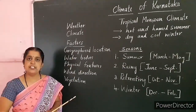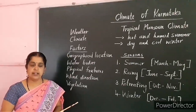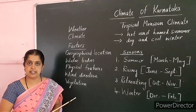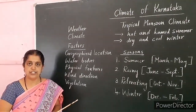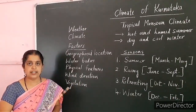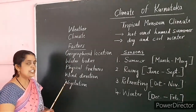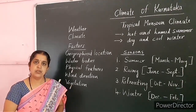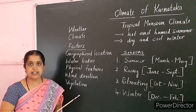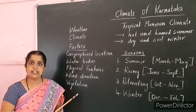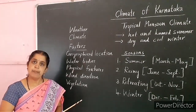The third factor is physical features — the landform, whether it is a plain land or mountainous area. As we know, when we go to higher altitudes, the temperature decreases. The fourth factor is wind direction — the direction from which wind blows is very important in deciding the climate of a region. The fifth factor is vegetation, which helps maintain the temperature of that area. These are the five factors which influence the climate of any region.